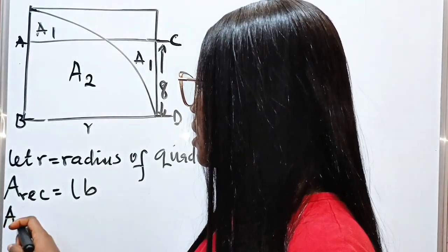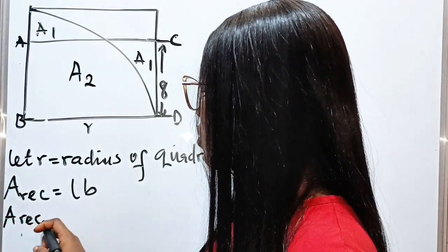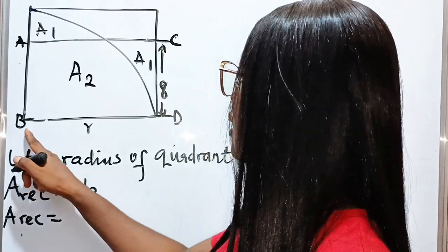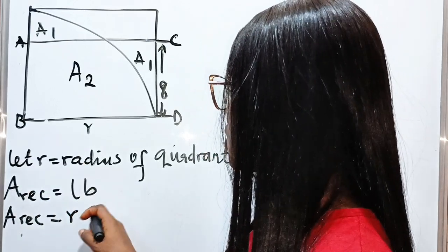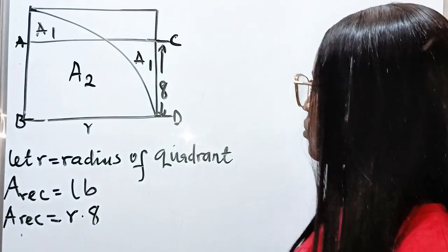So in this case, area of the rectangle is the length, which is R, multiplied by the breadth, which is 8.